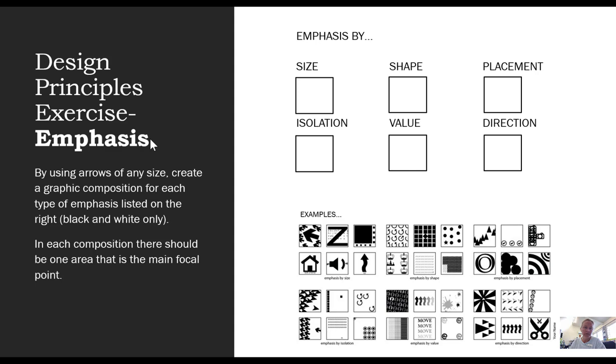In this slide, I'd like you to have a go in your book at showing an example of emphasis by size, shape, placement, isolation, value, and direction by using just arrows. They can be of any size or shape. And you're going to create that composition for each type. Just use black and white. Try to make sure that there's only one area of a focal point. You might find you're combining each of those areas in some cases. Experiment with how strong a focal point you can make without destroying the unity.